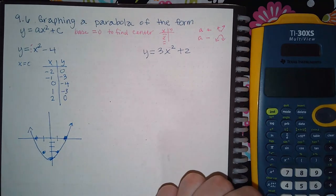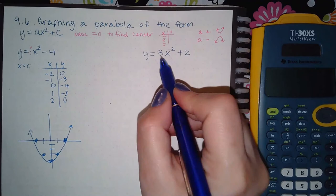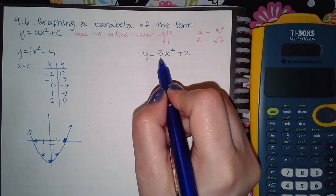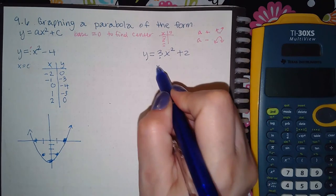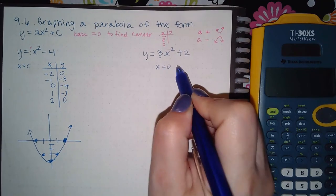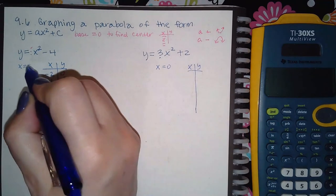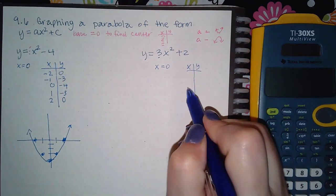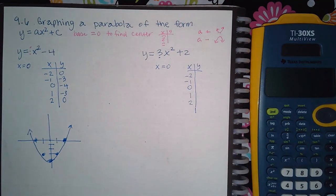Okay, so now over here, again, three is a coefficient because it's not in parentheses with the square. So the base here is just x. And if I set that equal to zero, I just get zero. So we're going to go ahead and put zero as our center and then use two x values to the left, two x values to the right.